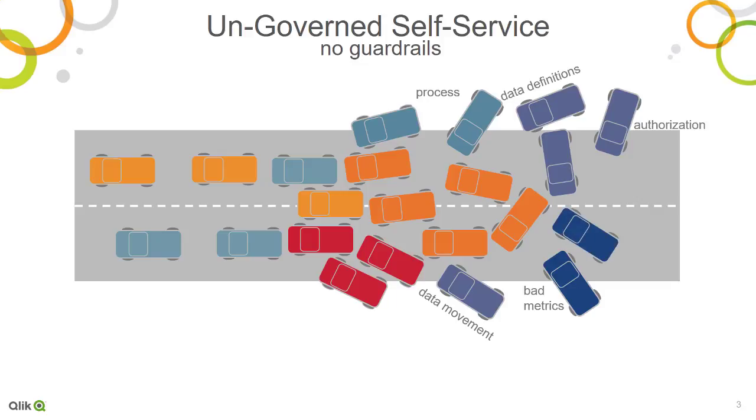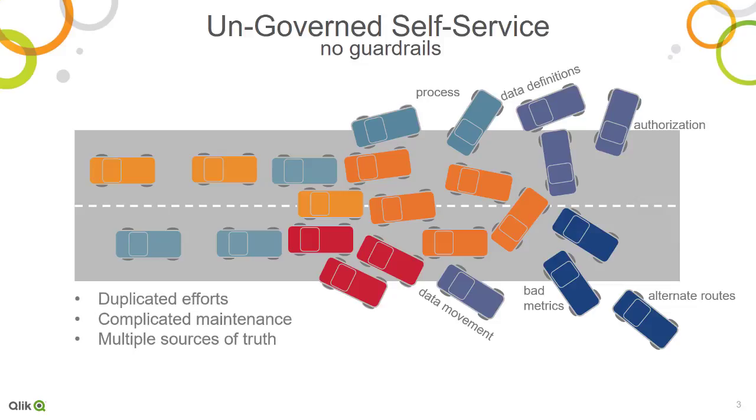Consequently, users find alternate routes leading to duplicated effort, complicated maintenance, and multiple sources of the truth.